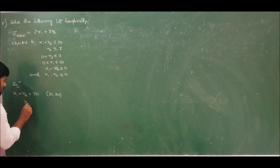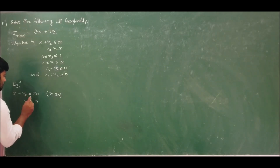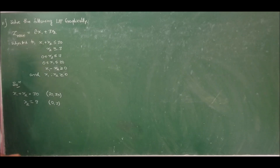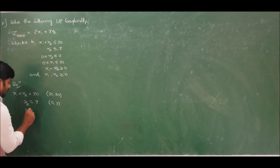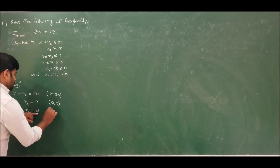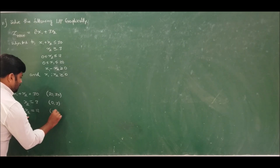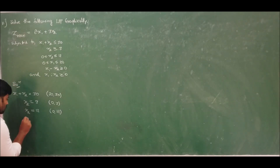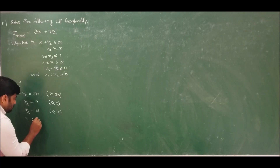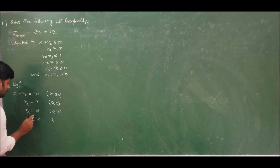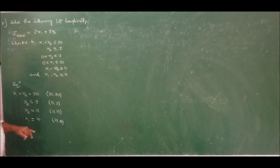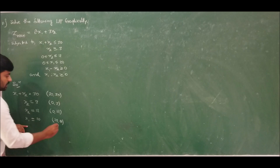The second constraint is x2 ≥ 3. Making it an equation gives x2 = 3, with coordinates (0, 3). Next, x2 ≤ 12 becomes x2 = 12, with coordinates (0, 12). Finally, x1 ≤ 20 becomes x1 = 20, with coordinates (20, 0) for that constraint line.